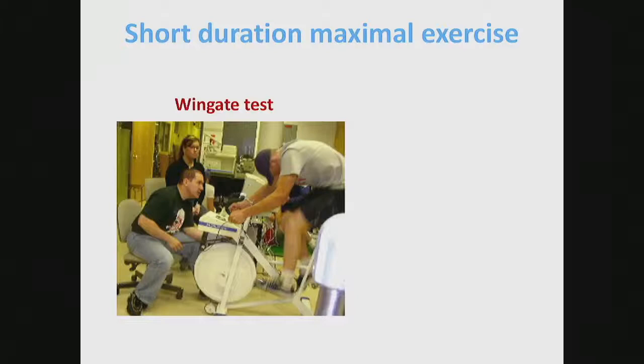The Wingate test is a horrible test. You sit on a bike and you have 30 seconds, and you have to just work as hard as you can. You basically ride your heart out for 30 seconds. By the end of it, you will be wanting to throw up. The idea is to look at the maximum power you can get to, whether you can sustain it, and they measure the rate of decay as well. It's really a measure of the maximum power you can put out over a very short duration - an indicator of short duration maximal performance.